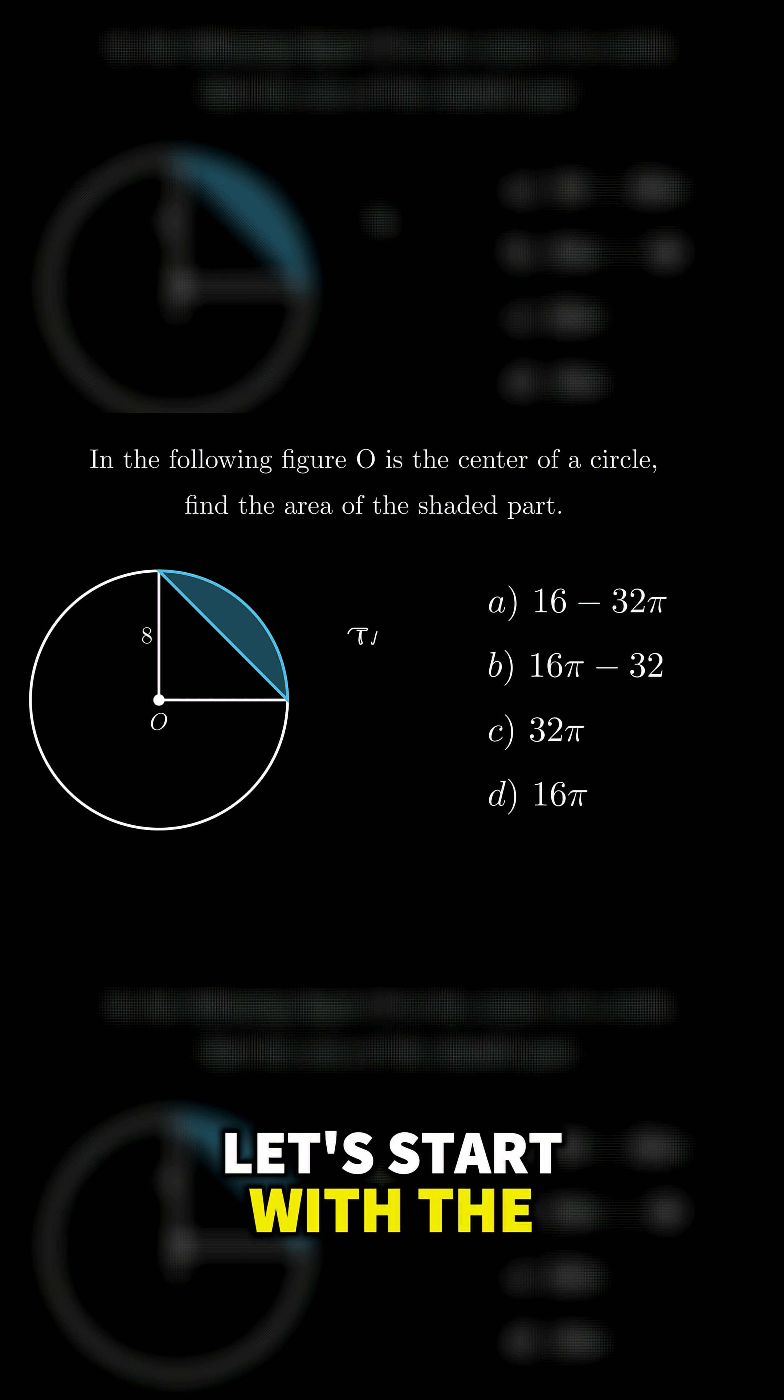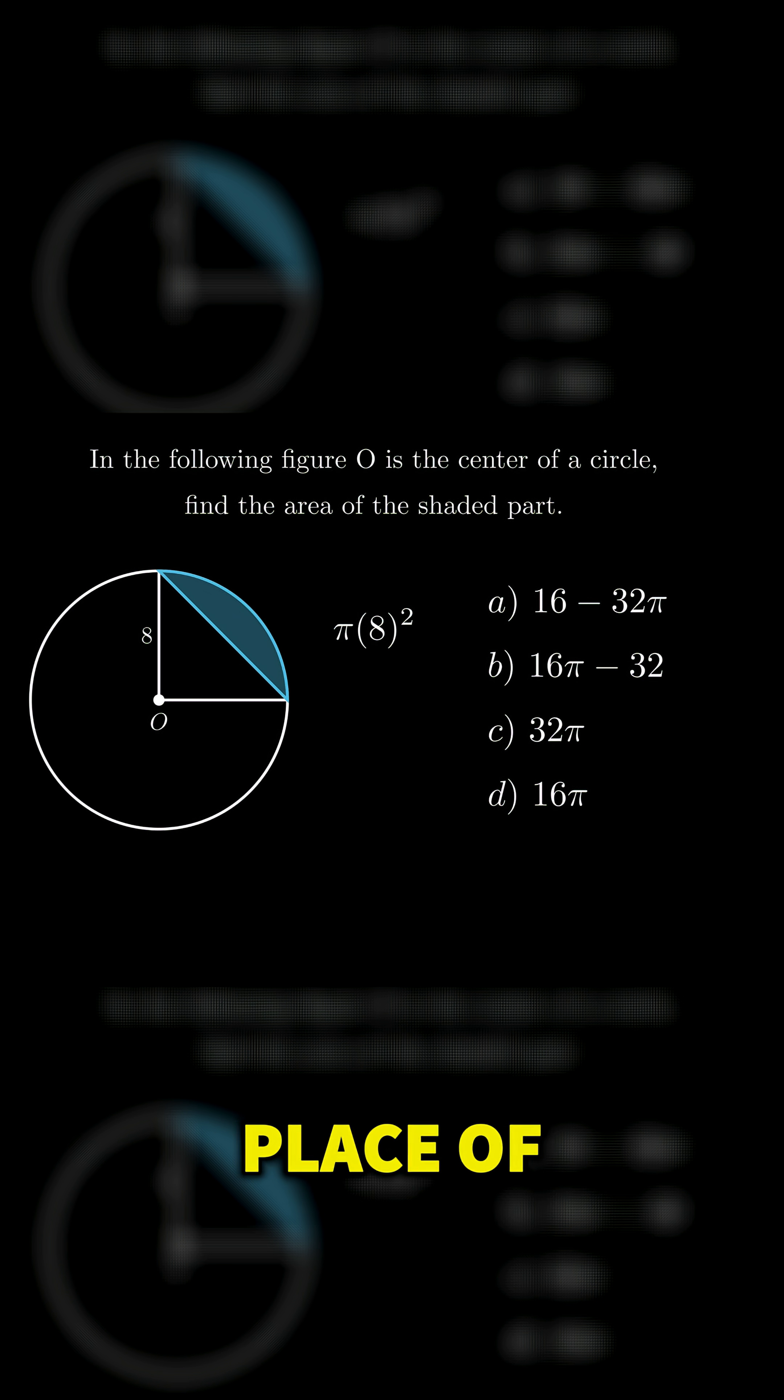First, let's start with the formula for the area of a circle: πR². In place of R, we put 8 and this should be equal to 64π.